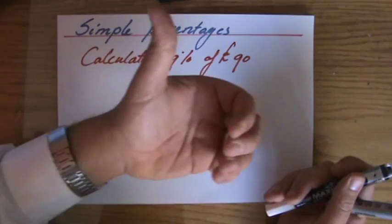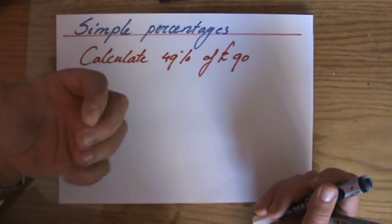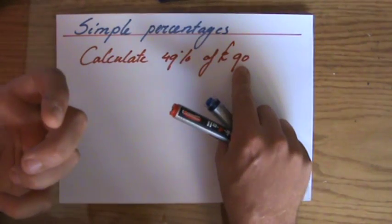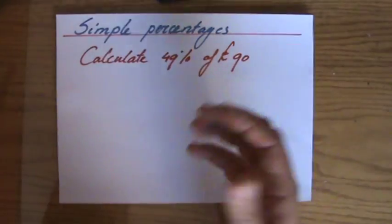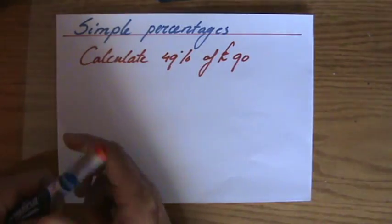Well, 49% is a little bit less than half, because half is 50%, so it's going to be a little bit less than 45, my answer. Now again, there are several ways of doing this. I'm going to show you one now.